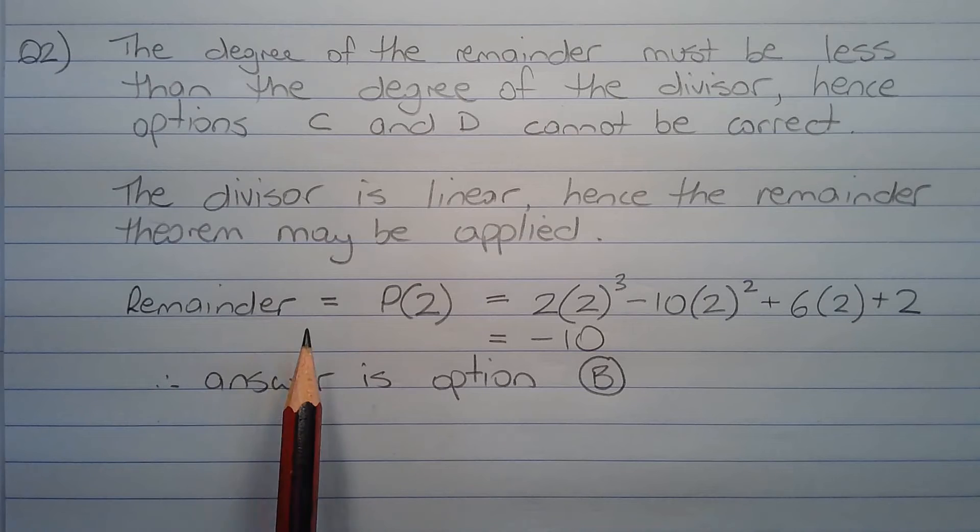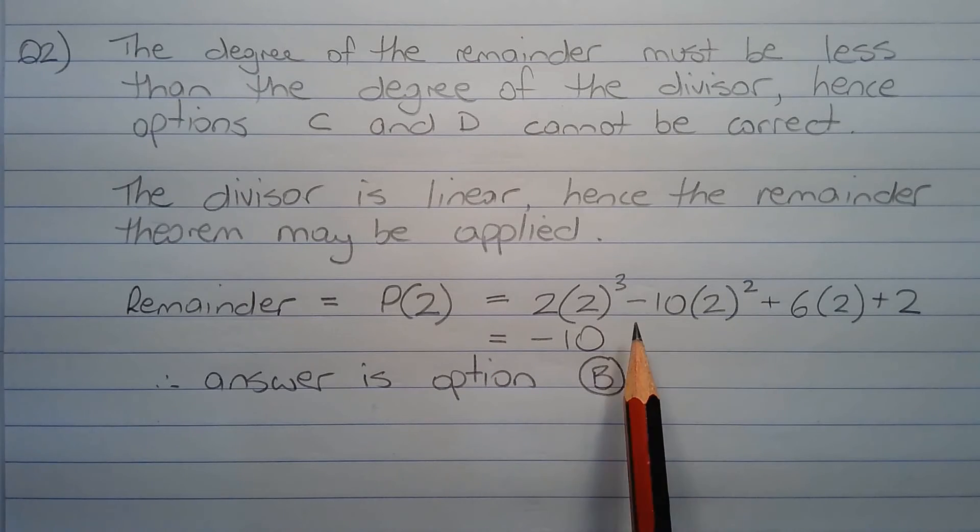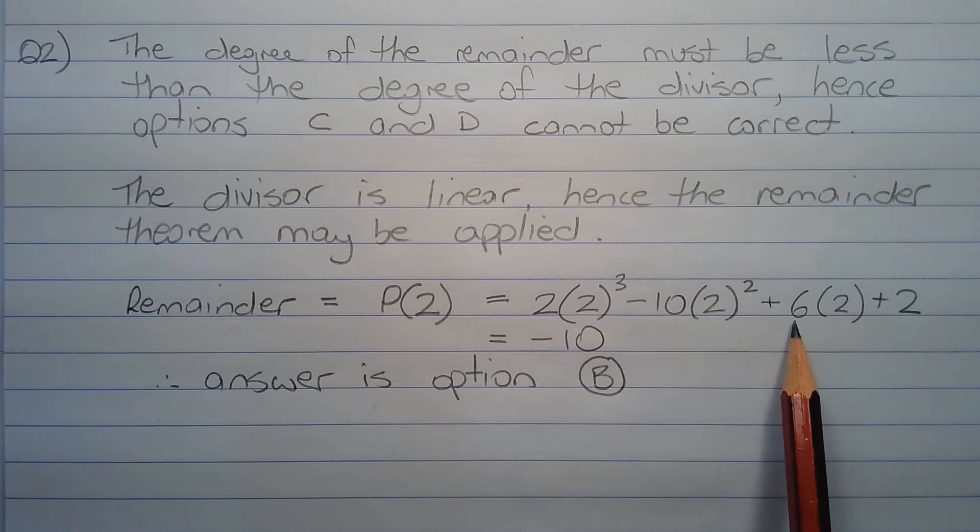So the remainder is equal to p of 2, where p of x represents the polynomial to be divided. That's equal to 2 times 2 cubed minus 10 times 2 squared plus 6 times 2 plus 2, which equals negative 10.